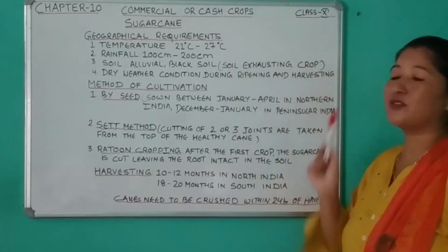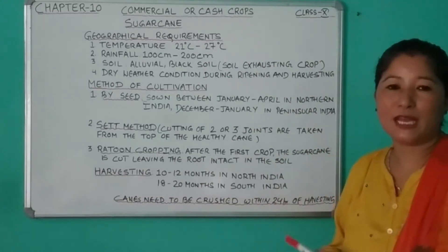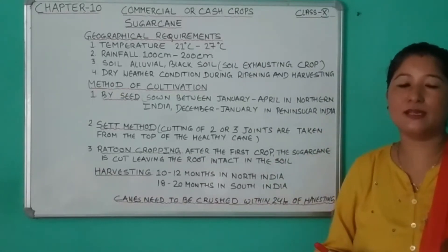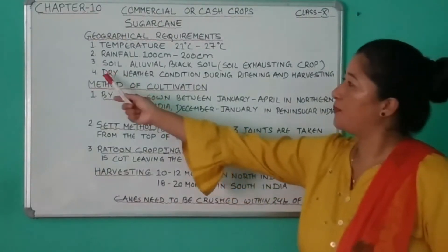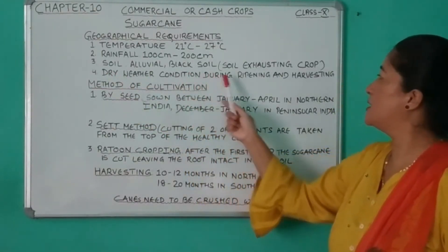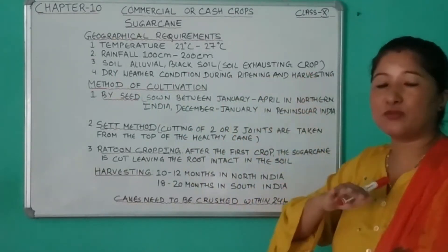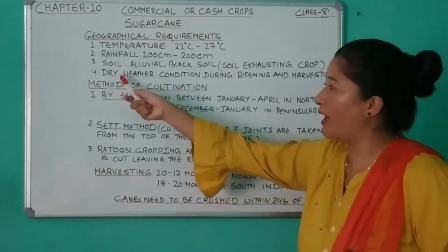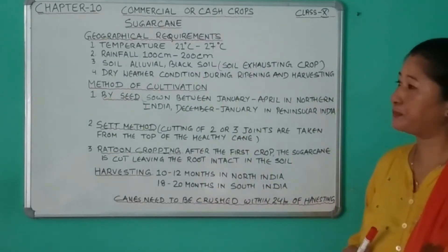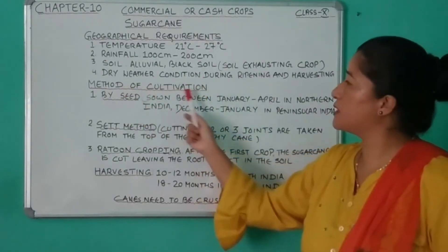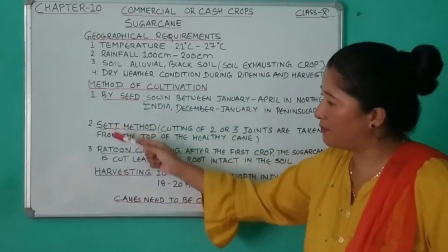Sugar cane is a soil-exhausting crop, so regular manuring or fertilizers need to be added to maintain soil fertility. Additionally, dry weather conditions during ripening and harvesting are important — there should be no rain during ripening and harvesting.